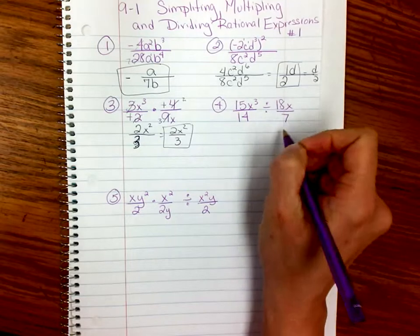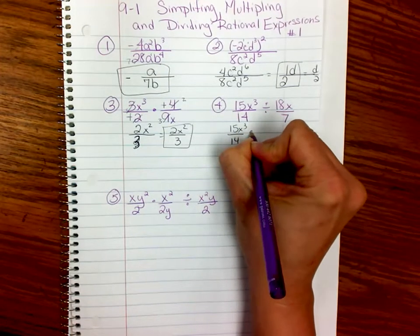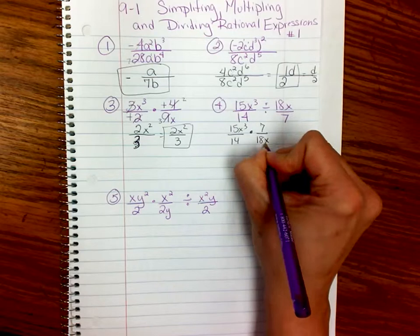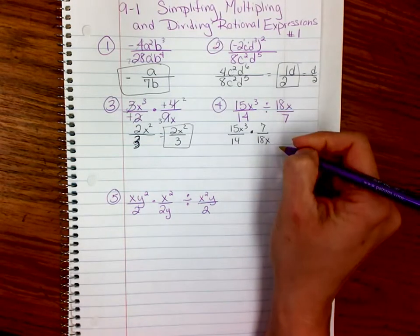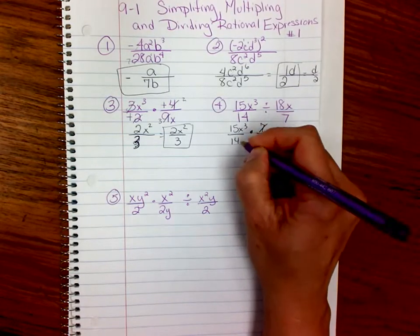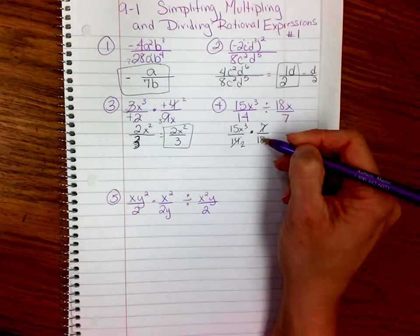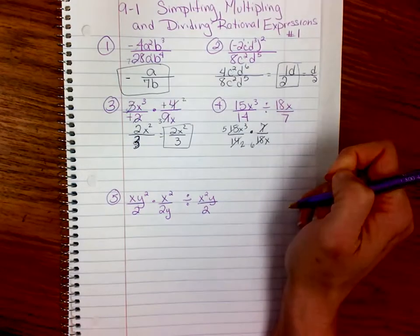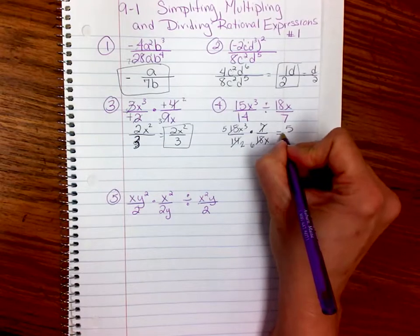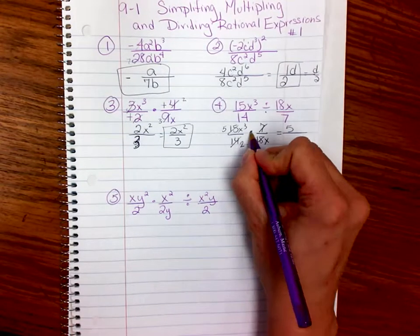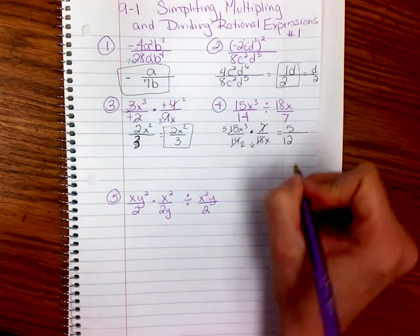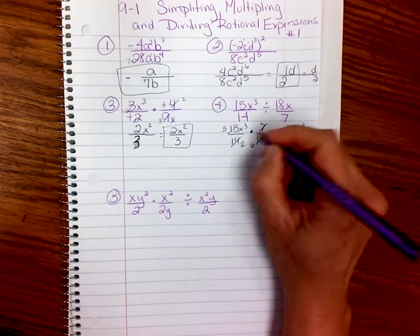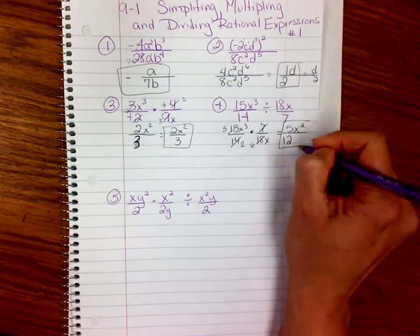Then over here, I'm going to flip this first. So I get 15x cubed over 14 times the reciprocal of 18x over 7, which is 7 over 18x. And then I cancel common factors. Anything in the numerator can cancel with anything in the denominator. So 7 goes into 14 two times. Notice 15 doesn't go into 18, but they have a common factor of 3. So 3 goes into there five times, and 3 goes into there six times. So now my number parts are set. 5 is the only number left in the top. And 2 and 6 are left in the bottom, since it's multiplying. 2 times 6 is 12. And then x cubed divided by x is x squared. So that's my final answer for that one.